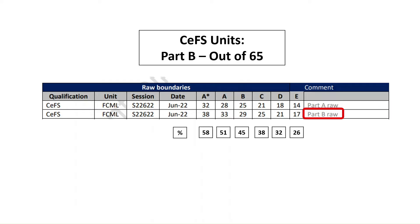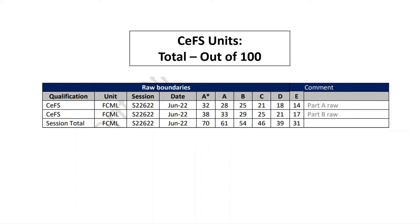So how do you calculate your total grade for each of the Certificate in Financial Studies units? Well, you add the two parts together. So for this June 2022 sitting of Unit 2, you add your Part A to your Part B and you get a session total. In this case, 32 plus 38 would have got you 70 out of 100 — the equivalent of an A star — with 61% for an A, 54% for a B, etc.